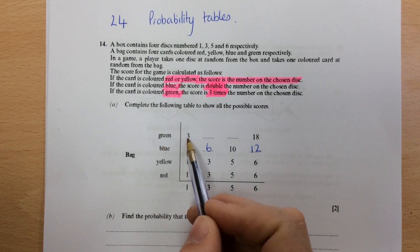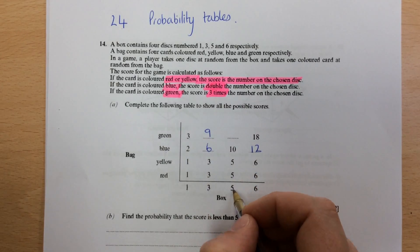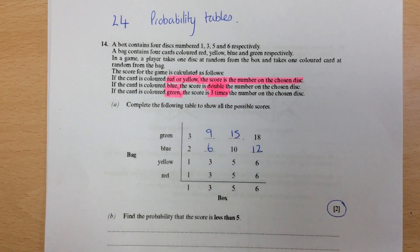Again, green, you triple. So one triples to three, three triples to nine, five triples to fifteen. Filling in, and that's two marks.